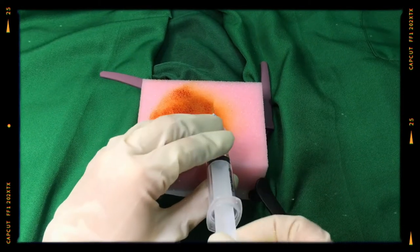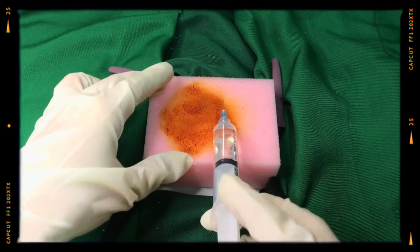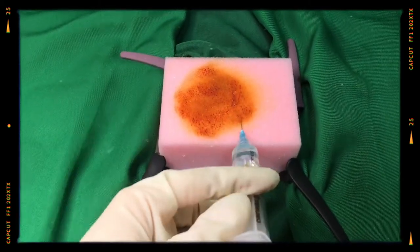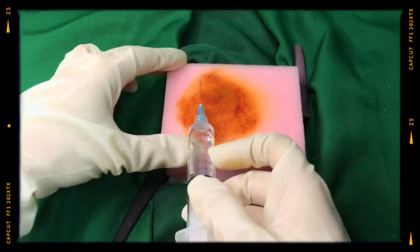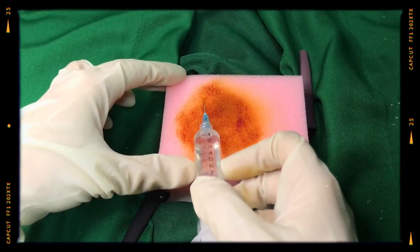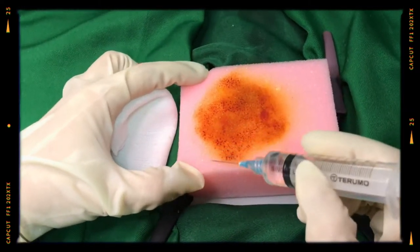Infiltrate the skin with a local anesthetic and block the intercostal nerve branches, the bevel side up of the needle. Don't forget to aspirate before injecting the anesthetic. Infiltrate up to the level of the pleura. Check the effect of the anesthesia using the tip of the needle.